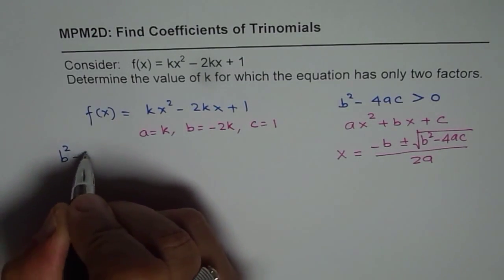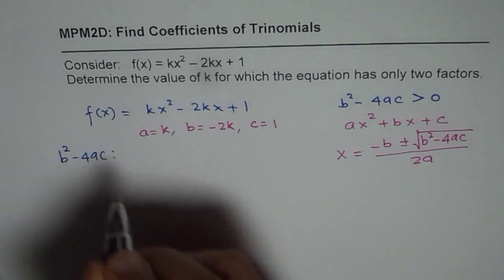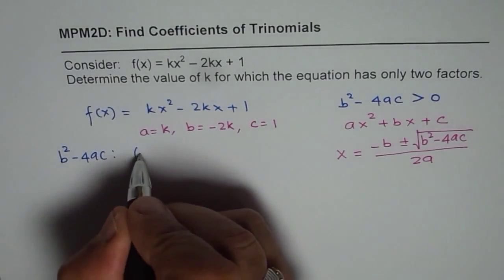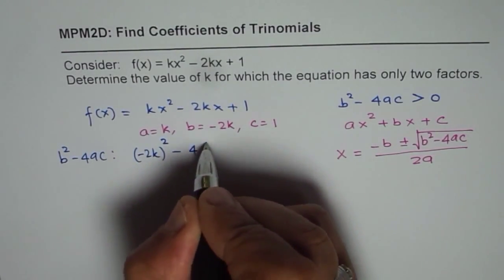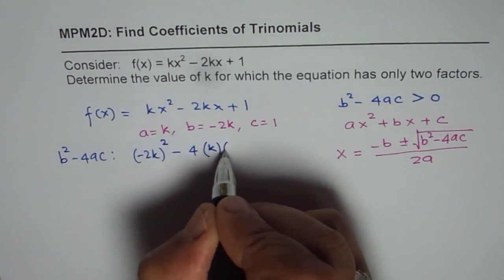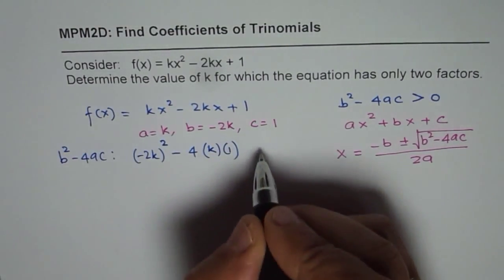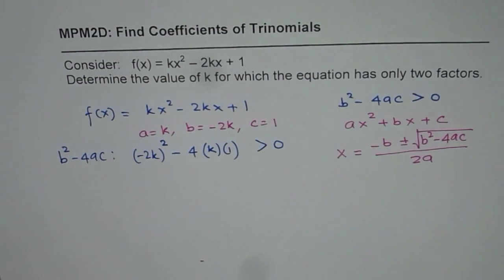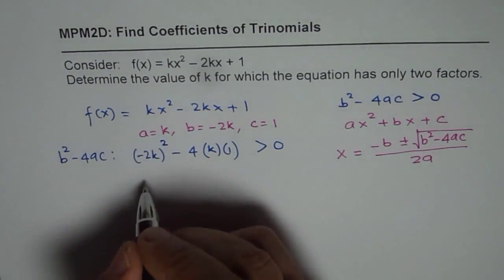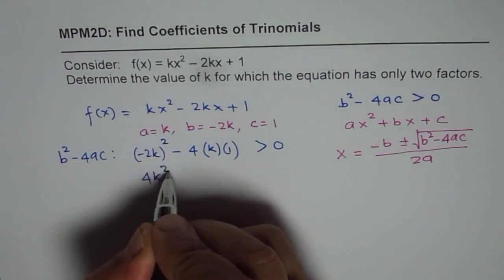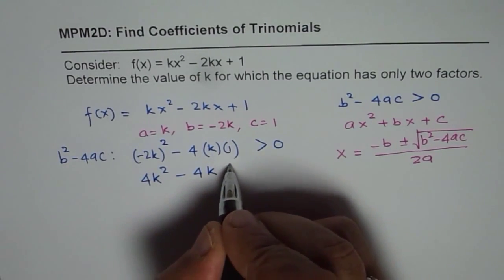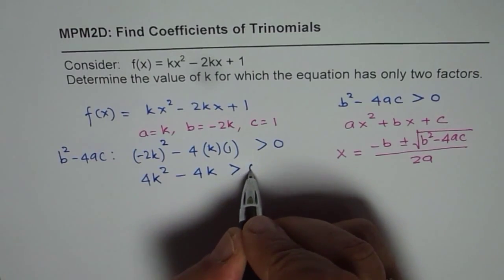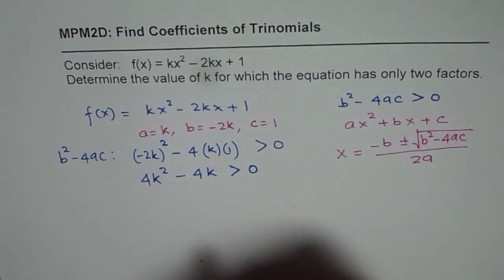So B squared minus 4ac is minus 2k whole squared minus 4 times k times 1. That should be greater than 0. So that is our equation. If we square this we get 4k squared minus 4k should be greater than 0.